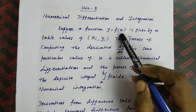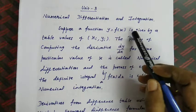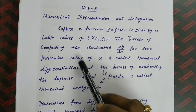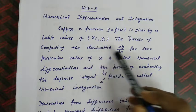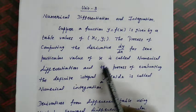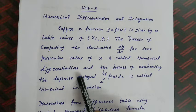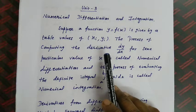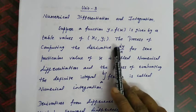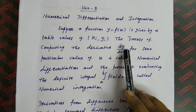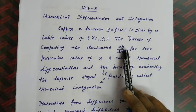Suppose a function y = f(x) is given by a table of values xᵢ, yᵢ. The process of computing the derivative dy/dx for some particular value of x is called Numerical Differentiation. For a given set of tabulated values of x and y, we find the value of dy/dx, and by the same manner, we can find the second derivative also.